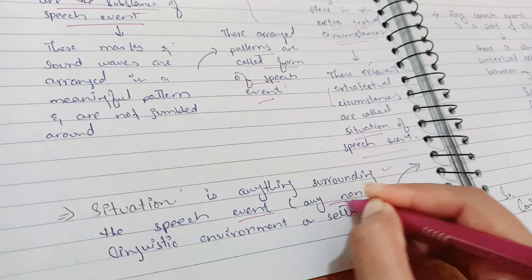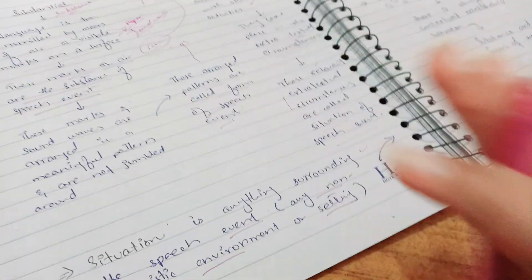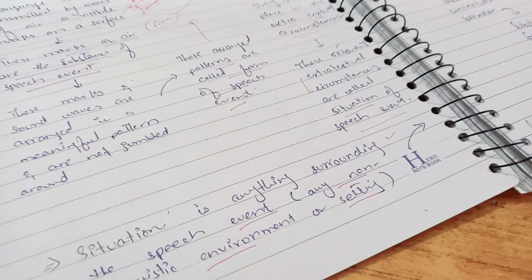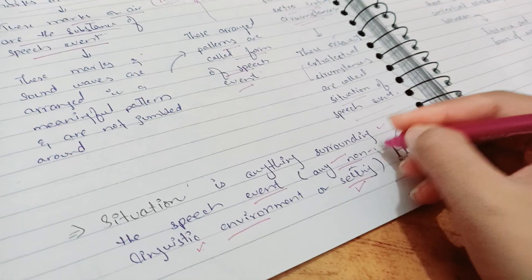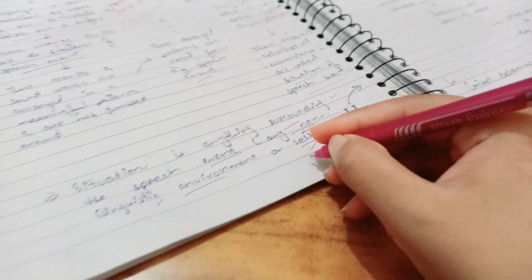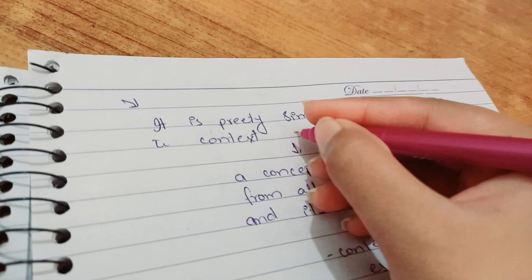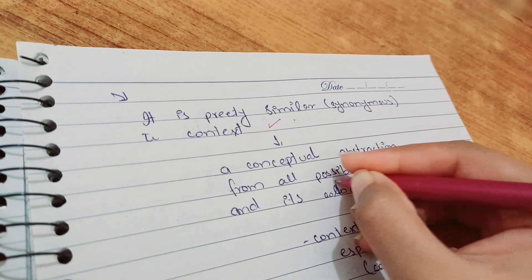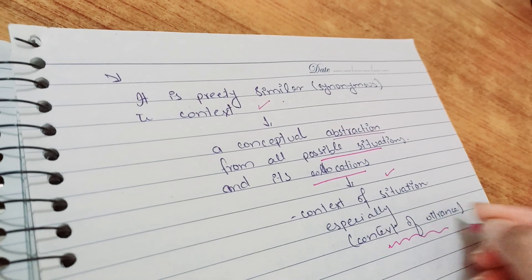Any language or conversation occurs within some context. For example, in this video I am talking to you in the context of conveying the meaning of stylistics and the aspects of speech events — that is my textual circumstance. The extra-textual circumstances — the context in which I am speaking — are called the situation of the speech event. Situation is defined as anything surrounding the speech event: any non-linguistic environment or setting. For example, you are watching just this page, but if we zoom out there is a complete messy setup around it — that non-linguistic surrounding and setting is the situation of my speech event. Situation is also related to context — it is a contextual abstraction from all possible situations.